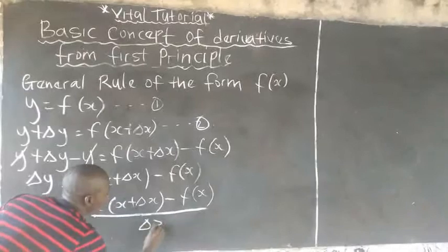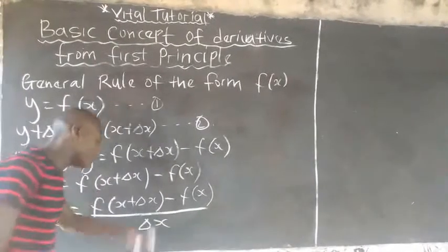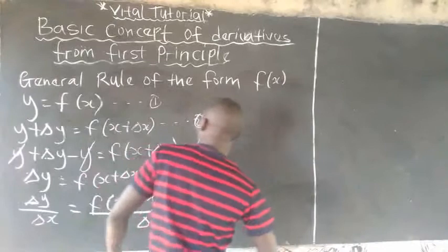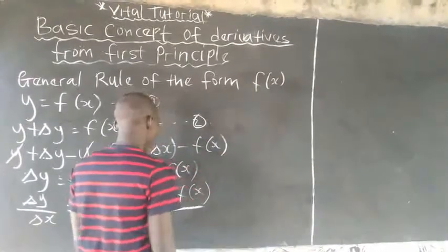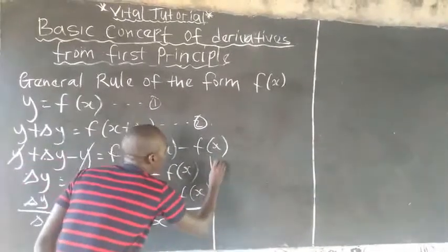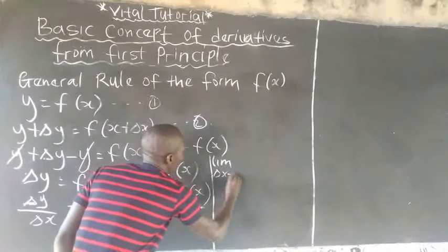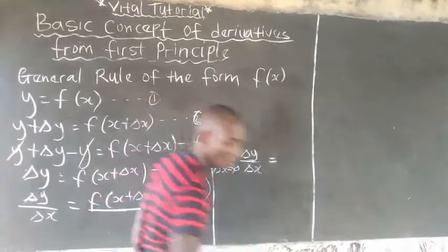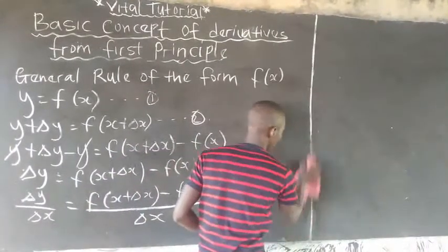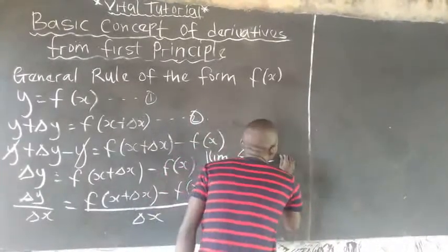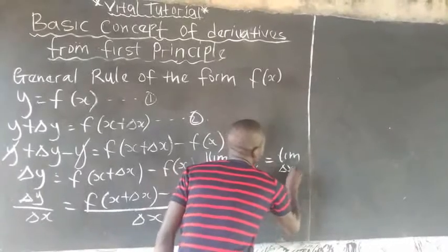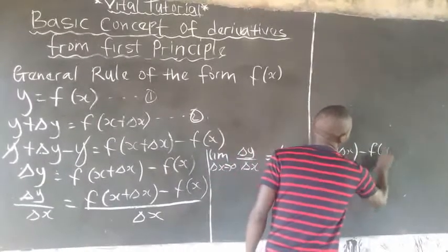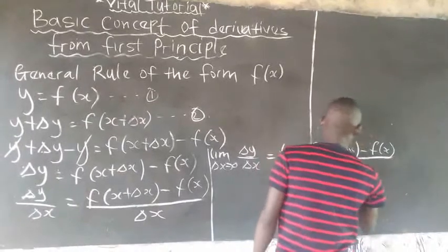The next step here is that you add the limit as change in s is approaching zero. So, limit as change in s is approaching zero of change in y over change in s will be equal to the limit as change in s is approaching zero of f(s plus change in s) minus f(s) all over change in s.